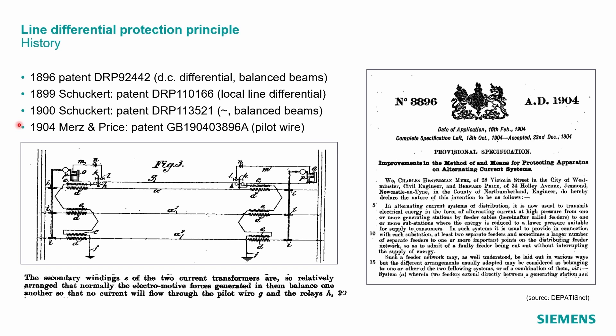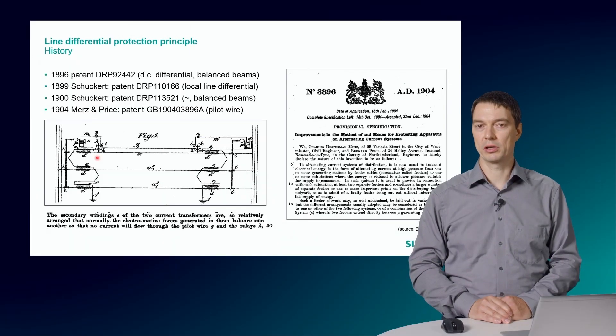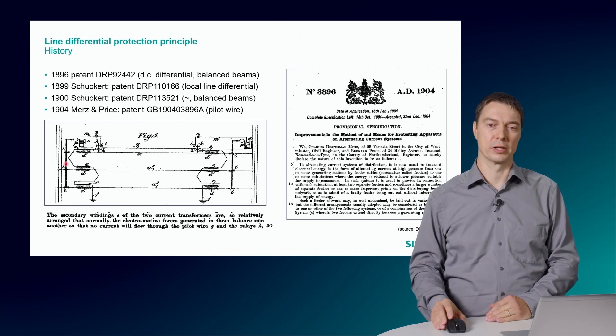Some extracts of this patent are shown on this slide here. The currents of both sides of the line are summed up electrical and transferred using a pilot wire to the remote end. In case a differential current is flowing on the pilot wire, it operated the circuit breaker.